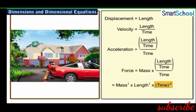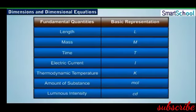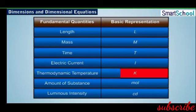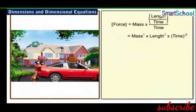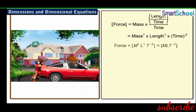For convenience, we use symbols to represent base quantities: M for mass, L for length, and T for time. The other four base quantities are represented by symbols of their SI units: I for electric current, K for thermodynamic temperature, mol for amount of substance, and cd for luminous intensity. The physical quantity expressed in terms of its base quantities is enclosed in square brackets, and we can write the expression for force as [F] = ML T⁻².